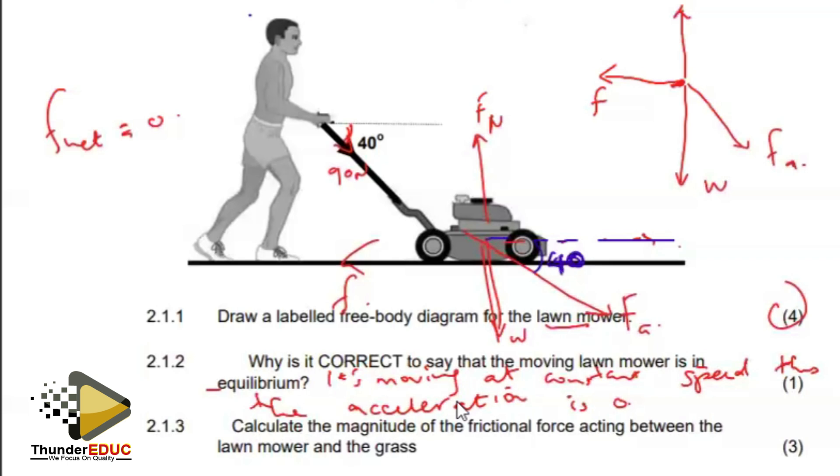If I try to resolve this applied force into components, it's going to be in this direction. It's going to be F sine of 40 and F cosine of 40. Looking at the forces acting on the lawnmower horizontally, I can start by saying F net is zero or F net equals MA.